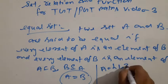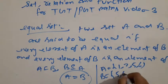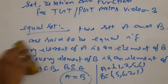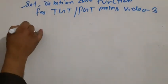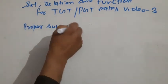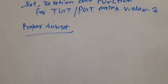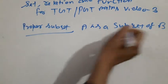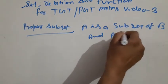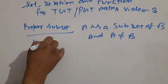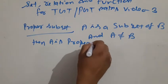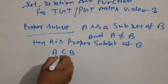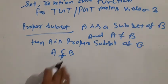For example, the elements of A are {1, 2, 5, 6} and the elements of B are {5, 6, 2, 1}. These are equal sets. Now, proper subset: A is a proper subset of B if A is a subset of B and A is not equal to B.